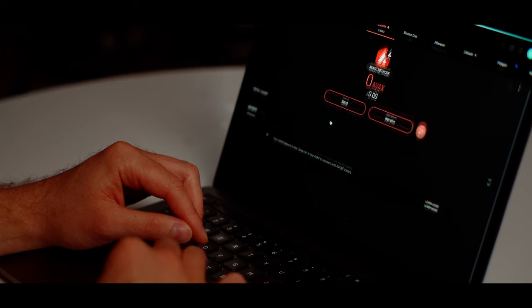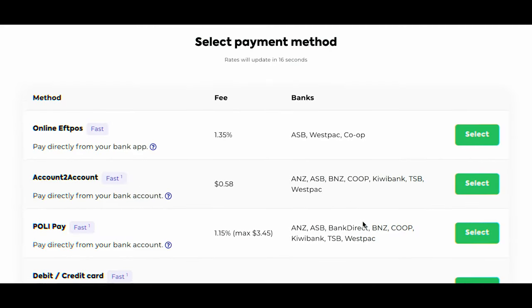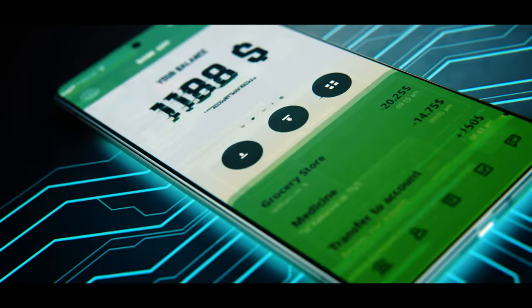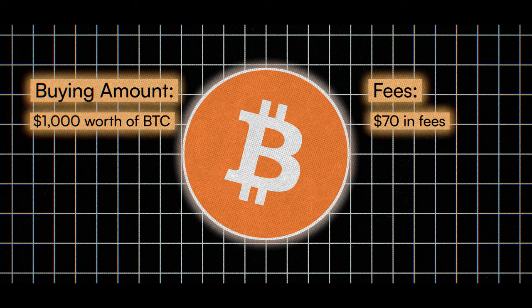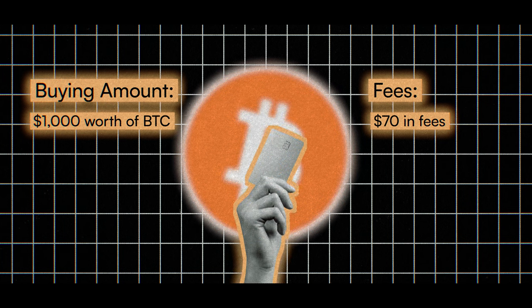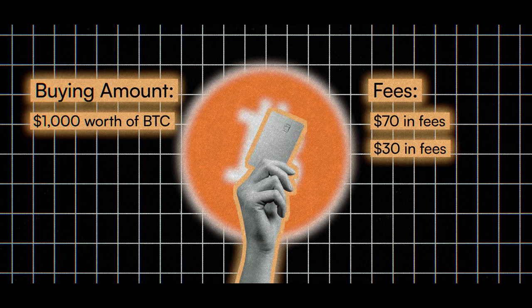You can also buy crypto directly from Exodus with a few different payment options — either a bank transfer or credit card — but the fees for buying directly from Exodus are pretty high. If you're wanting to buy $1,000 of Bitcoin, it's going to cost you about $70 in fees. In comparison, using your debit card to buy crypto through Coinbase is going to be about $30 in fees, so it is much cheaper buying from an exchange and then sending it to your Exodus wallet.